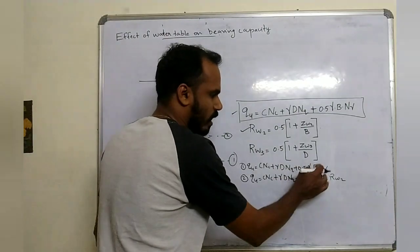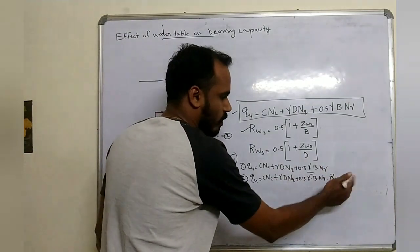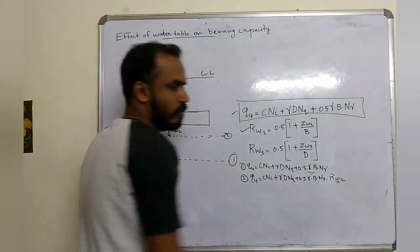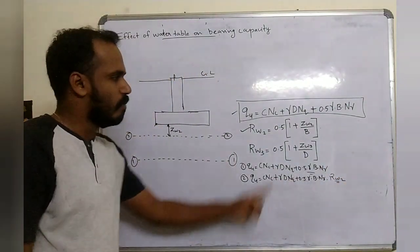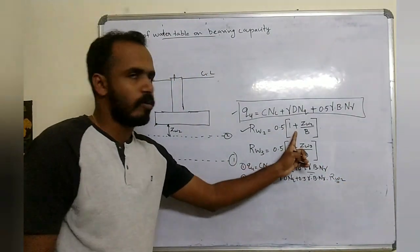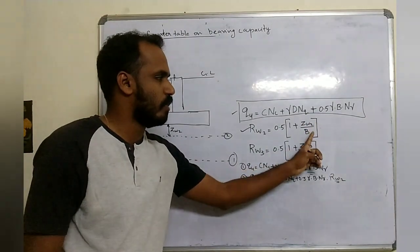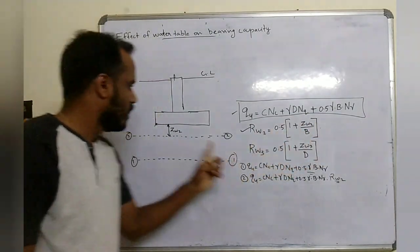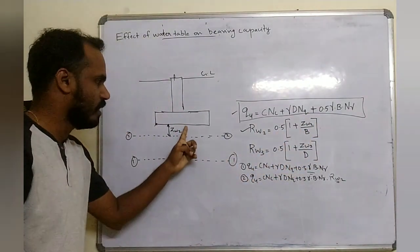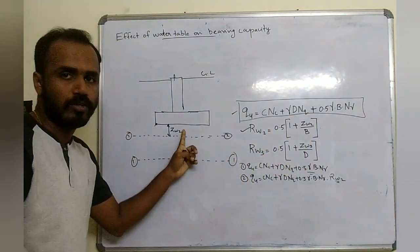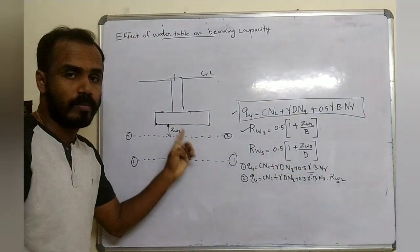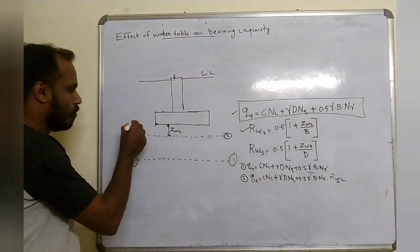The last term is multiplied by correction factor Rw2. The formula involves Zw2 divided by B, where Zw2 is the distance from the base of the footing to the water table.